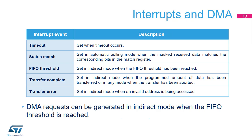The Octo SPI has five interrupt sources: time out; status match, when the masked received data matches the corresponding bits in the match register in automatic polling mode; FIFO threshold; transfer complete; and transfer error. DMA requests can be generated in indirect mode when the FIFO threshold has been reached.